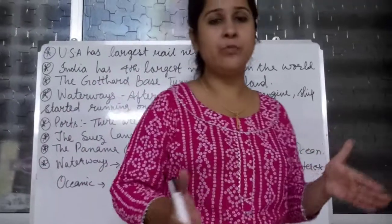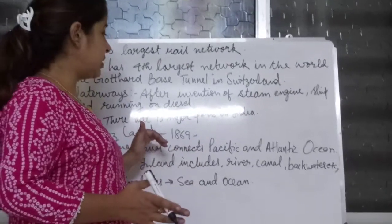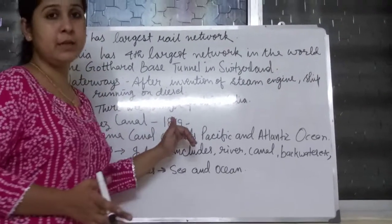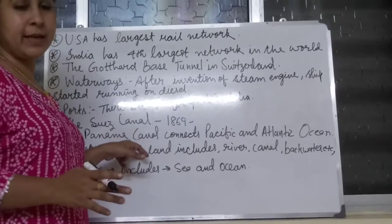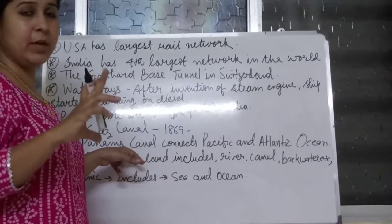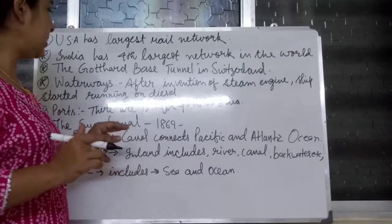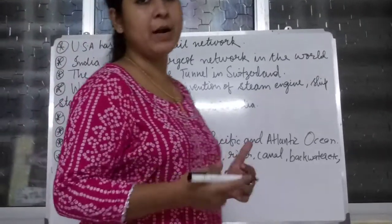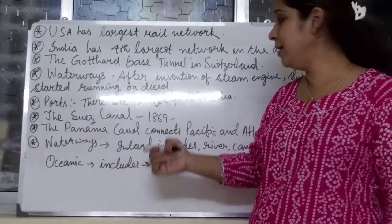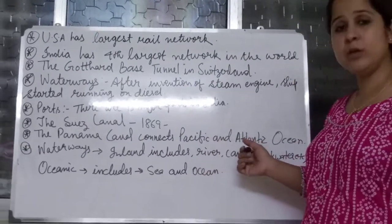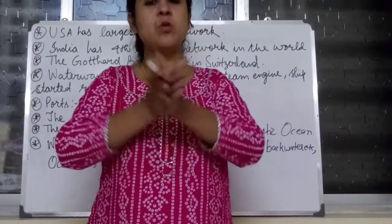A canal is a very long waterway — a part of the waterways joining two different parts. The Suez Canal was created in 1869. The Panama Canal is one of the most famous canals in the world, joining the Pacific Ocean and the Atlantic Ocean. The joining part between these two oceans is called the Panama Canal.